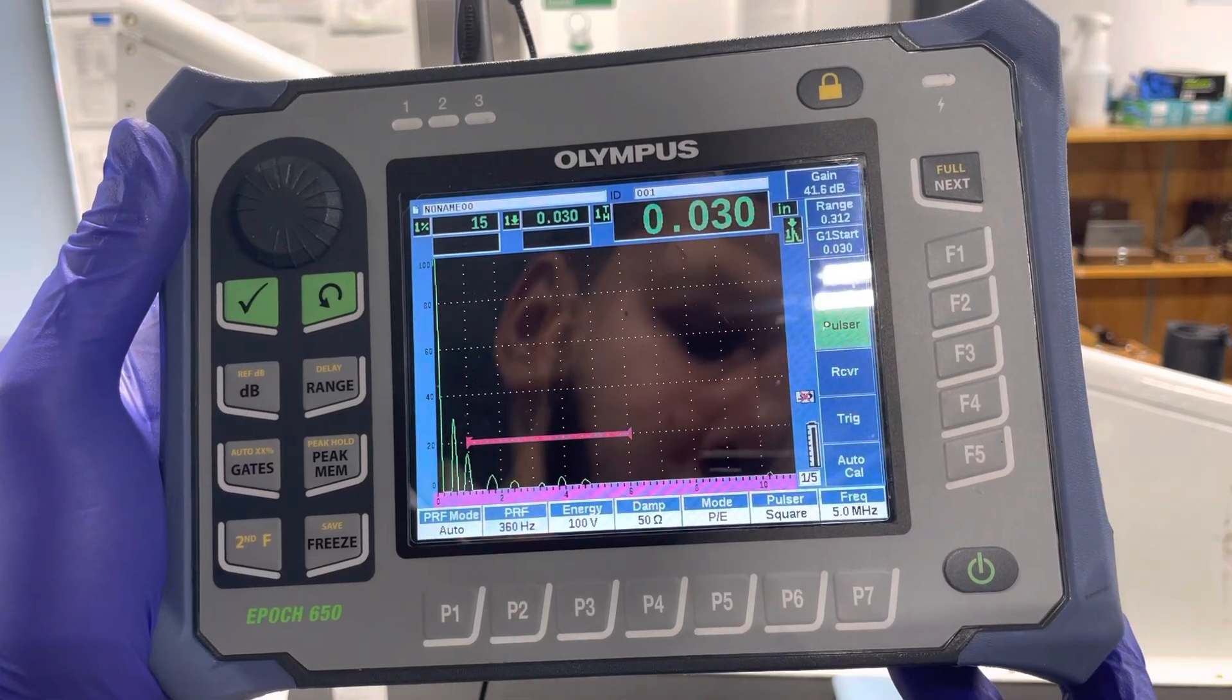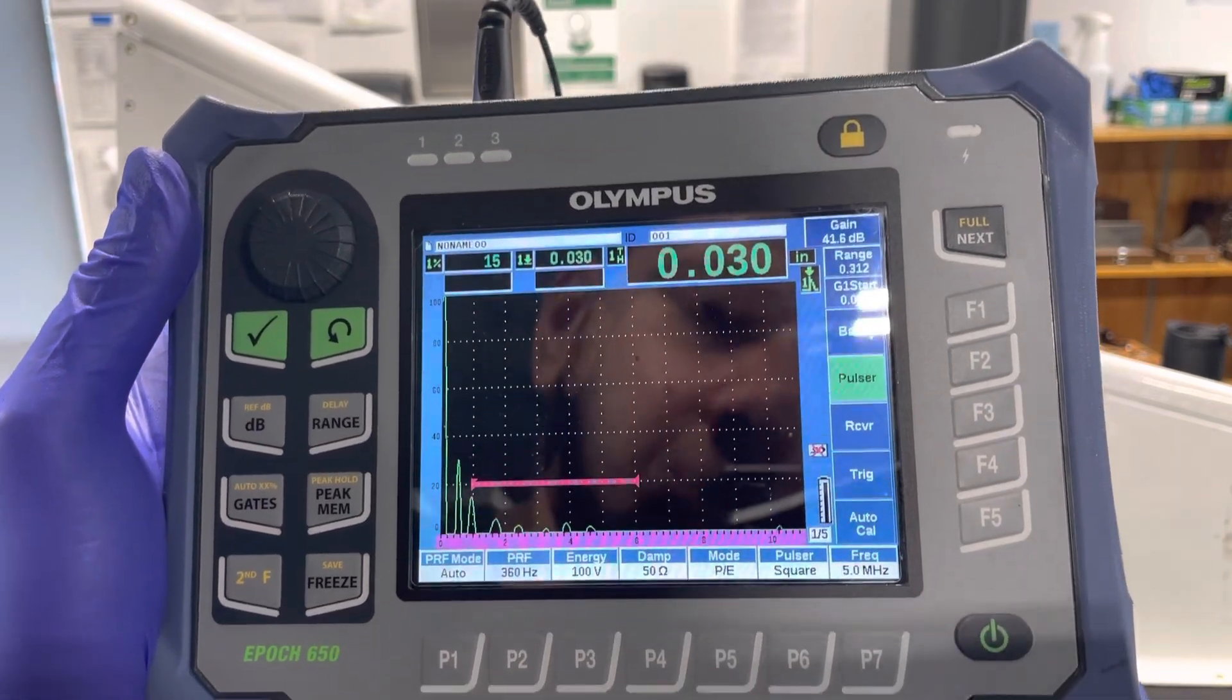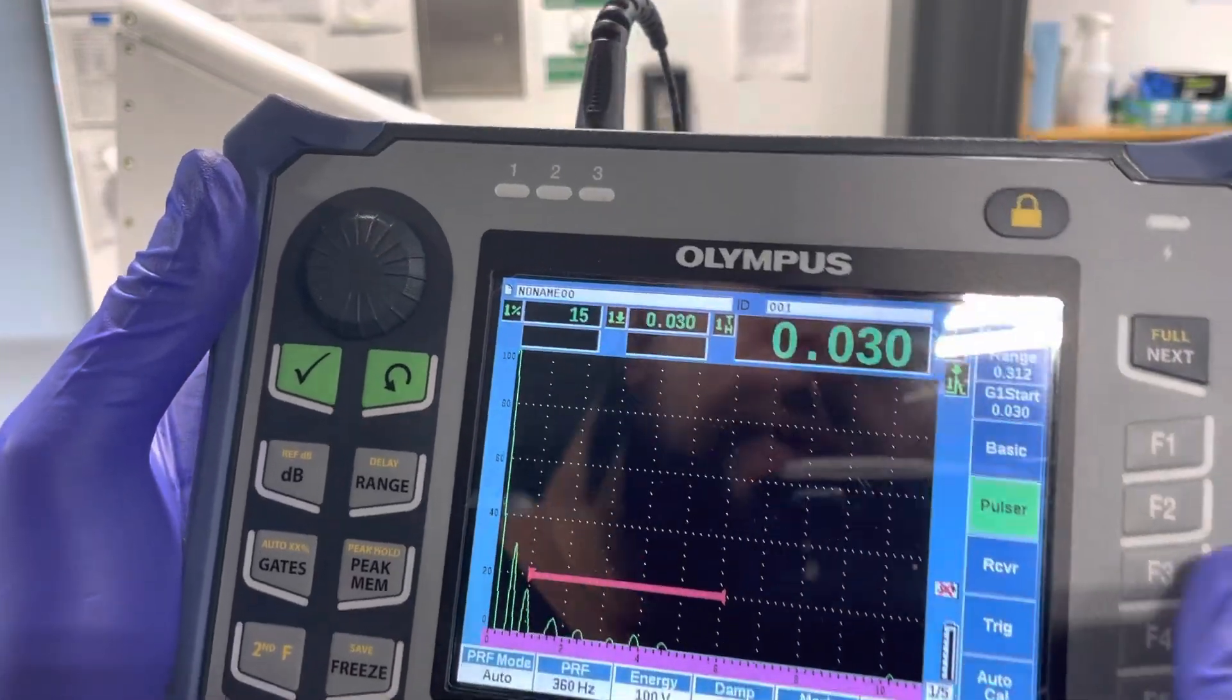Minus 60 hertz, 100 volts energy, 50 of the damp, one pulse echo, square pulser, 5 megahertz.